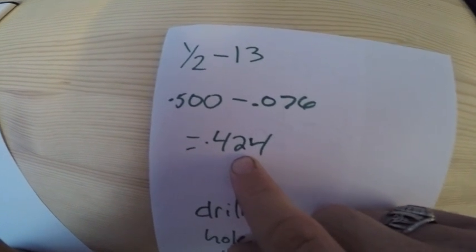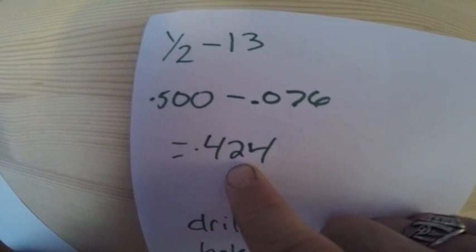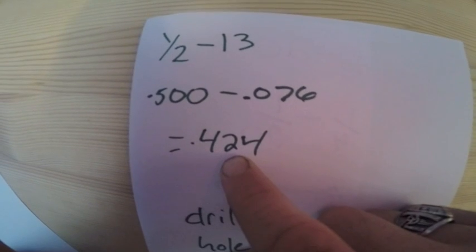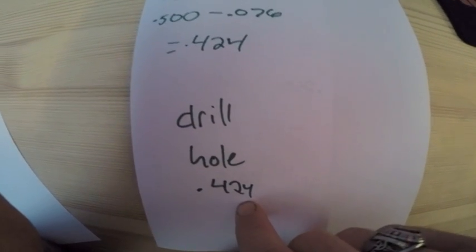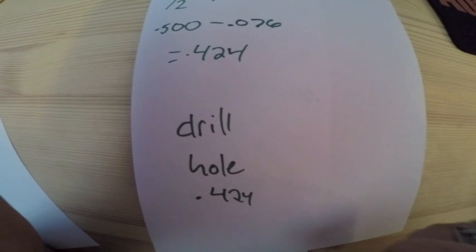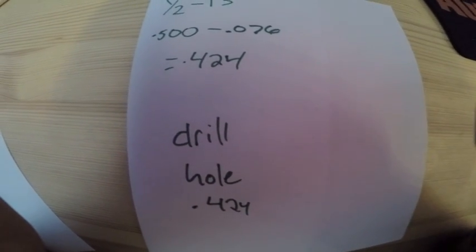So you're going to go grab your calipers, you're going to measure up a drill close to the range of 424, drill your hole, chamfer it, fire your tap through it, and you should have good threads in there.